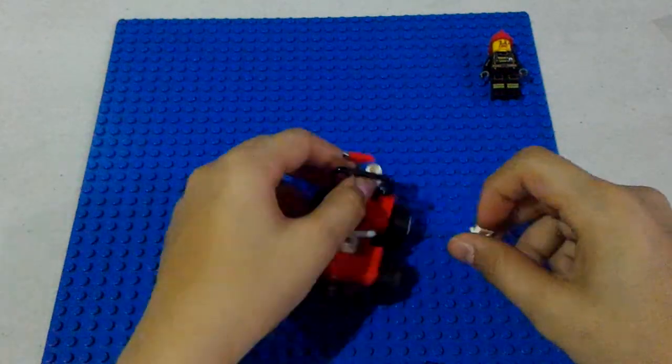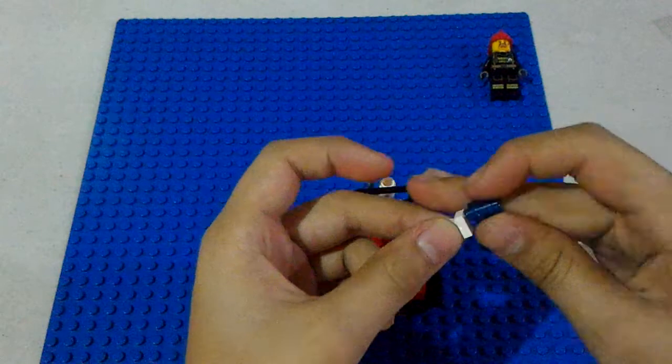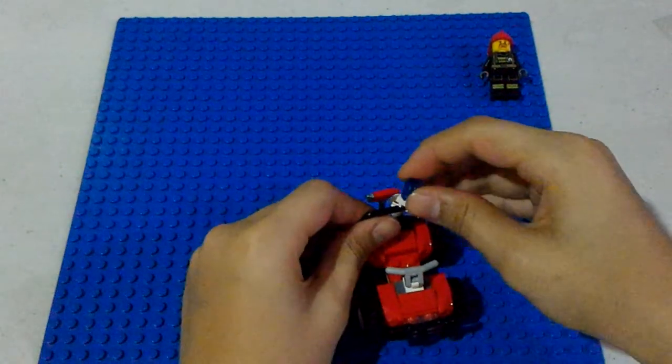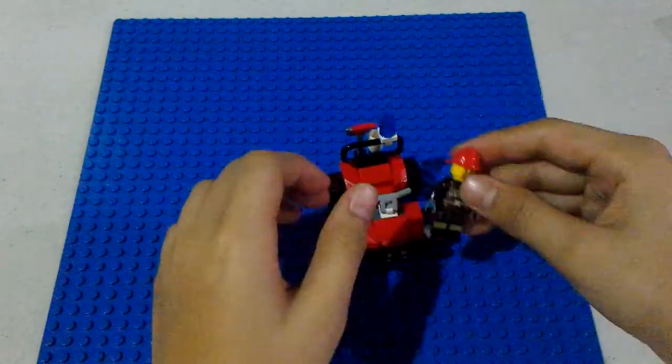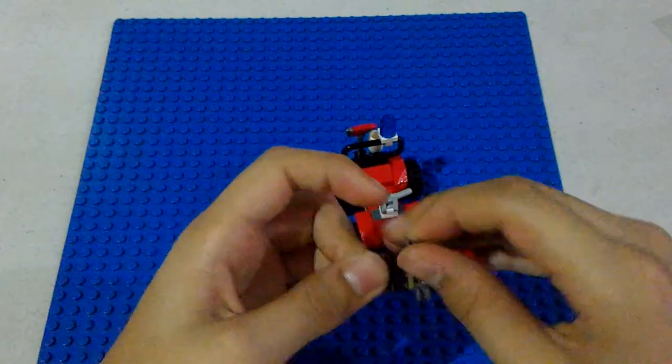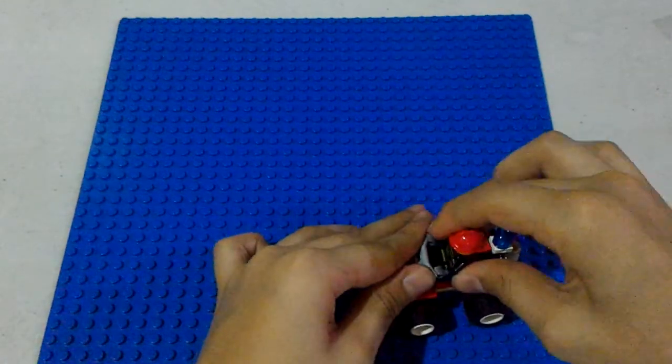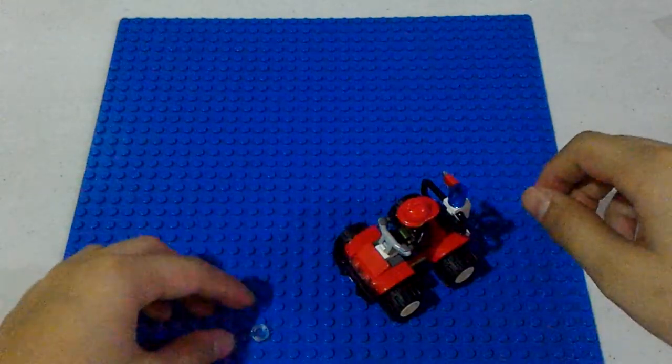Okay. Then step 16 says that we must attach this one here and place it here. Then after that we place the minifigure where it is supposed to be. Here. And this is an extra piece.